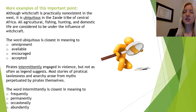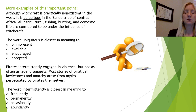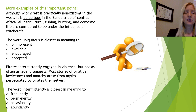Now let's talk about the word ubiquitous. The sentence starts with 'although': although witchcraft is practically non-existent in the West, it is ubiquitous elsewhere. So ubiquitous must mean something very different than non-existent. The correct answer is the first answer — omnipresent, which means found everywhere. In the second example, pirates intermittently engaged in violence, but not as often as legend suggests. They only engaged in it intermittently, which actually means occasionally. The third answer is correct.